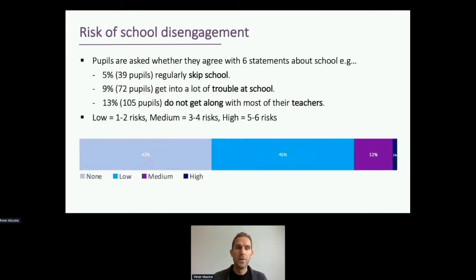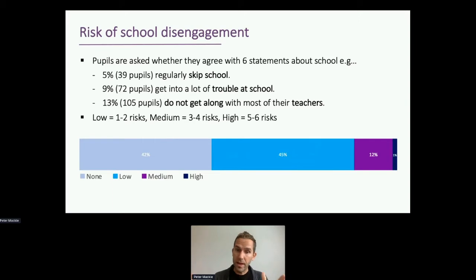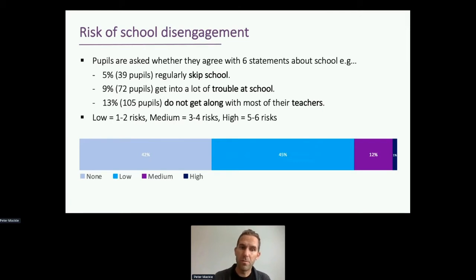On school disengagement — schools have pretty good data on this already. As headlines: 5% of pupils regularly skip school, 9% got into a lot of trouble at school, and 13% didn't get along with most of their teachers. We combine six statements into a scale, and about 12% of young people are at medium risk of disengagement, with a very small proportion at high risk. Schools generally have a good sense of school disengagement.